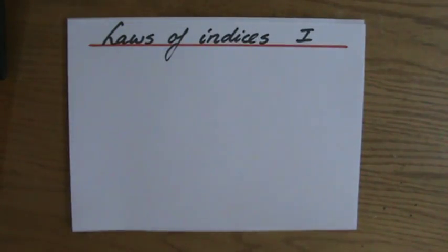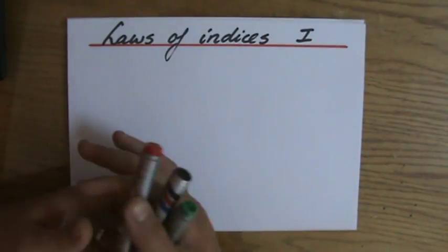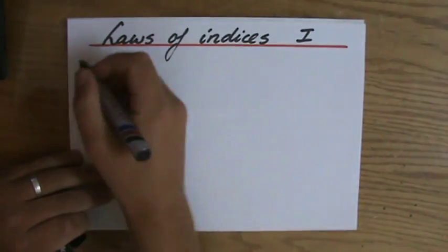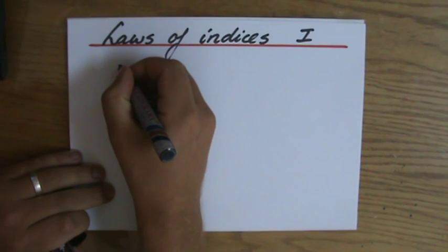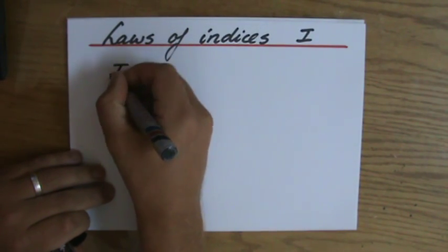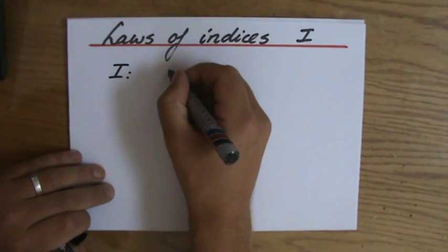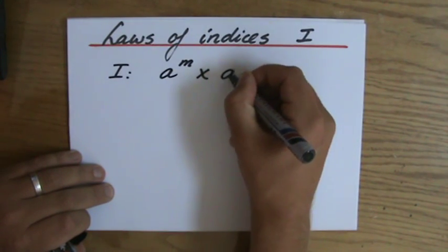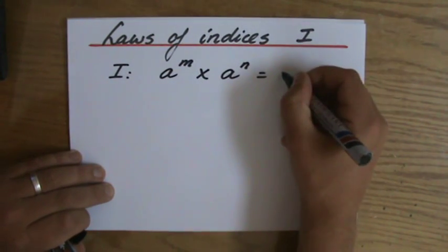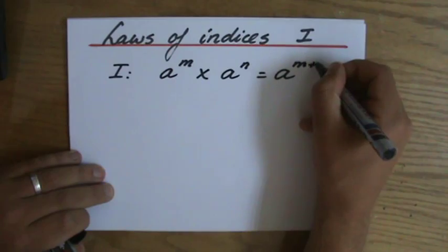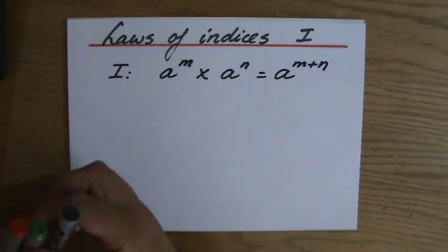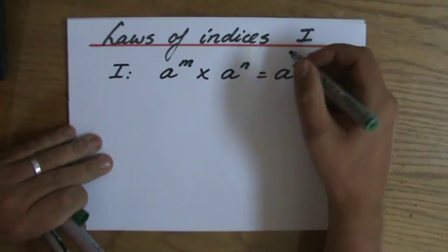Well, you have seen the introduction now. We are here to talk about the first law of the indices. In my previous video I said the first law is a to the power m times a to the power n is a to the power m plus n. That's the general law which you have to remember.